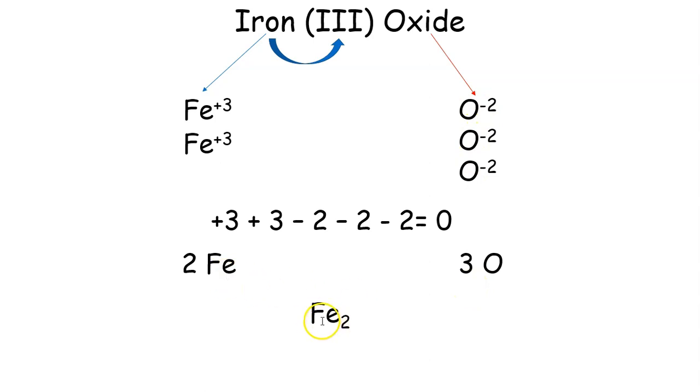And then what you do is you start writing your formula. So I have uppercase F, lowercase e, subscript 2 because I have two irons. Then I have to put my oxygen down here. I have uppercase O, subscript 3 because I have three oxygens. So iron (III) oxide is Fe2O3 for its formula.